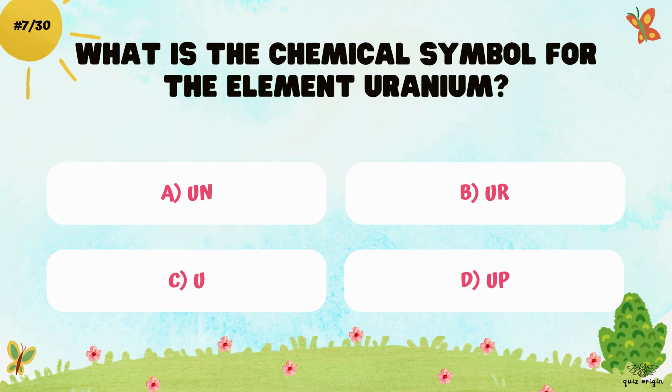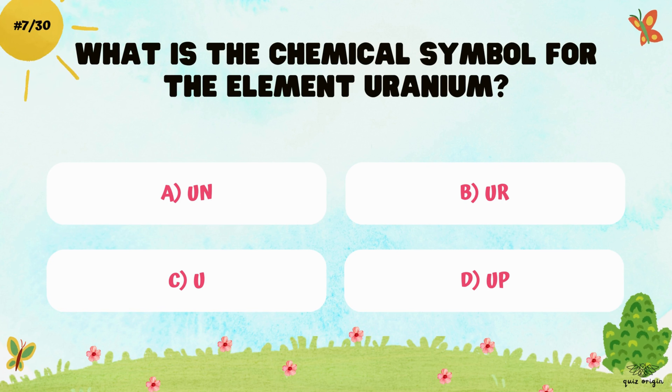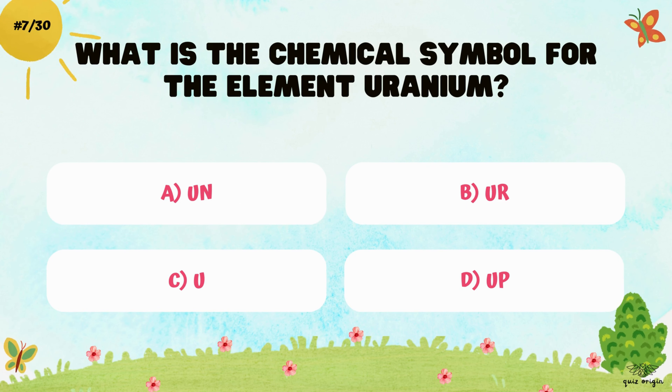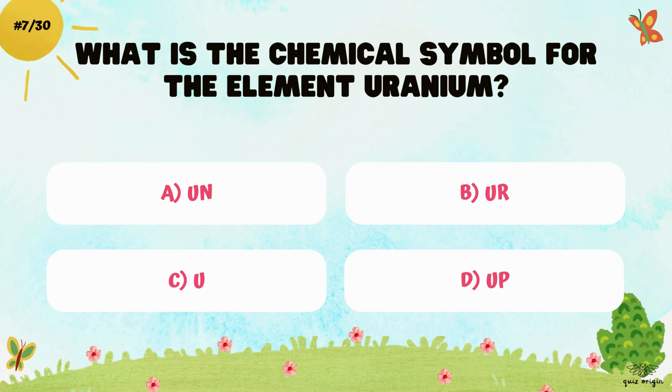What is the chemical symbol for the element Uranium? A. Un, B. Ur, C. U, and D. Up.